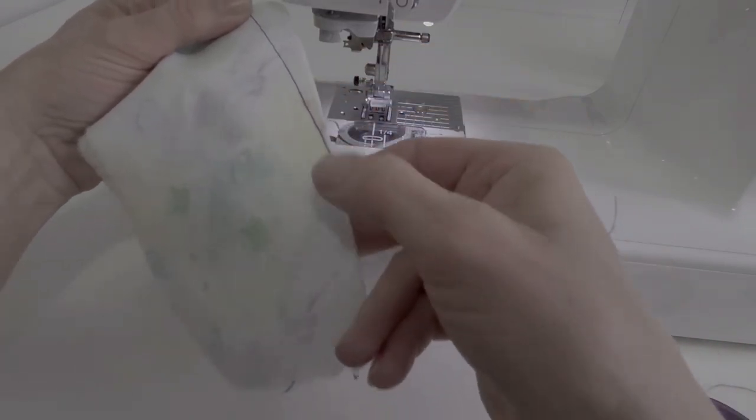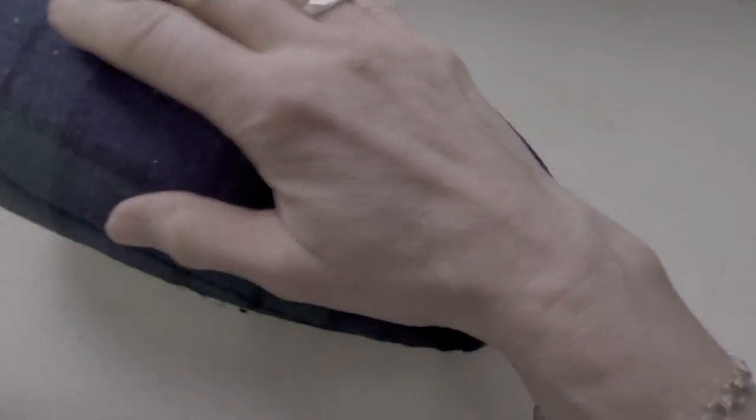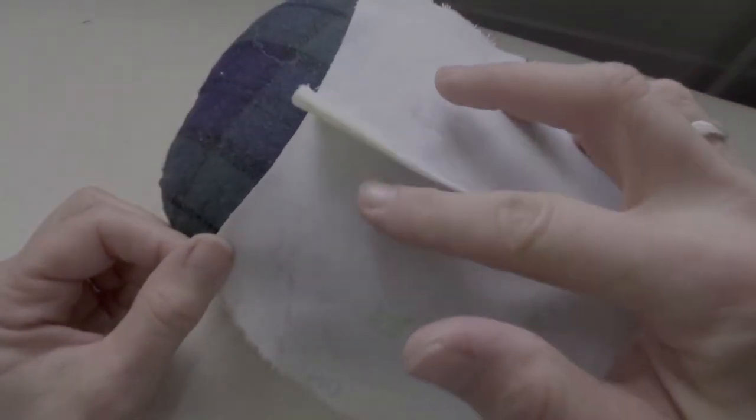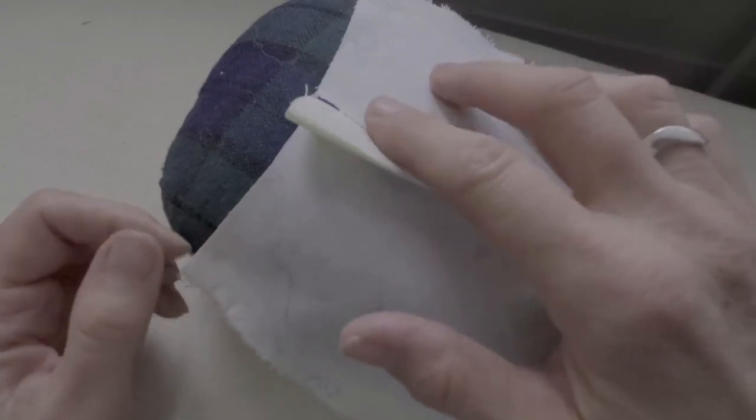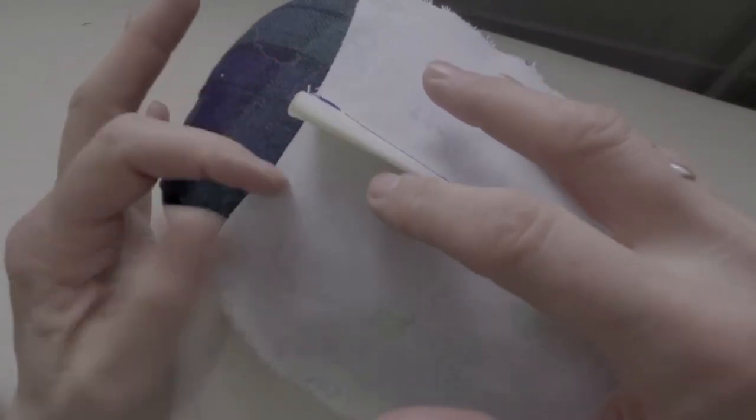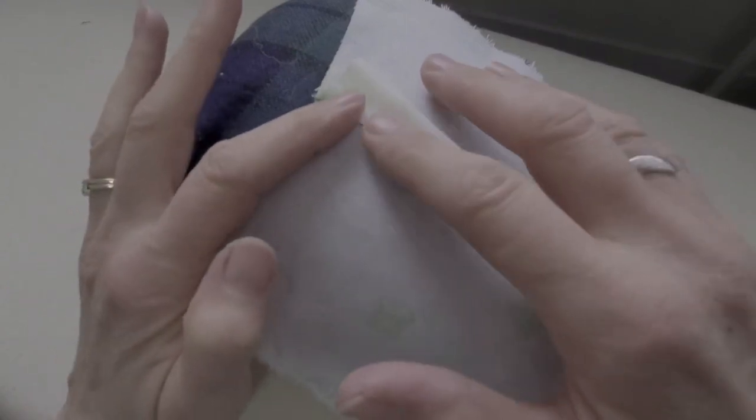There won't be any bubble at the end. When you're pressing a dart, you can use a tailor's ham so that you're pressing in that three-dimensional shape. You're not flattening it out. Darts press toward the center of a garment or down. And when you have it going the correct direction, it should line up at the top. The peaks and valleys are built into the pattern so that they line up.